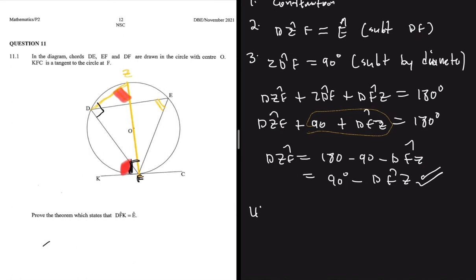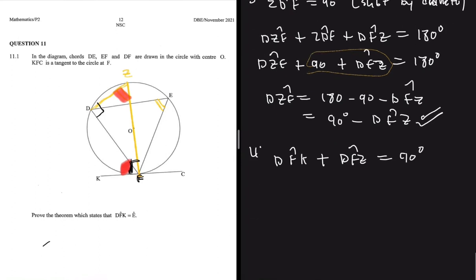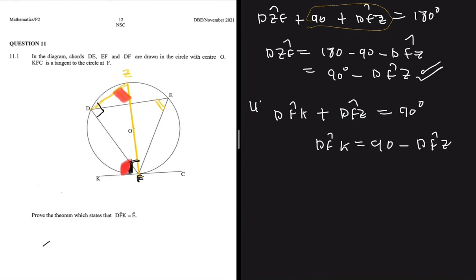We're gonna have DFK plus DFZ equals to 90 degrees. If we make DFK the subject of the formula, we're gonna get DFK equals to 90 minus DFZ. So now we can see that DFK is equal to DZF, but we know that DZF is equal to E. So that will all be equal to E, and by that we have proved the tangent-chord theorem.